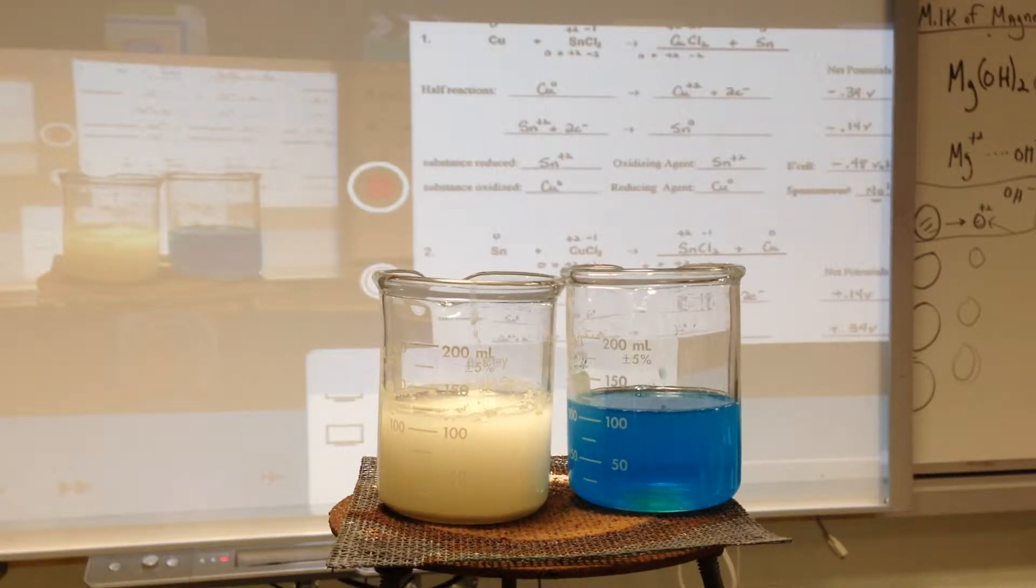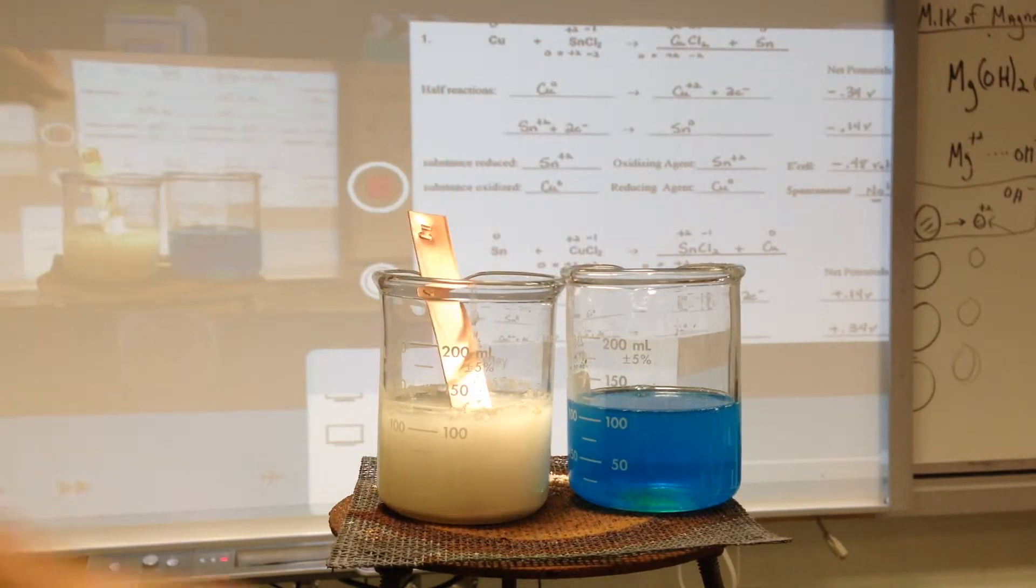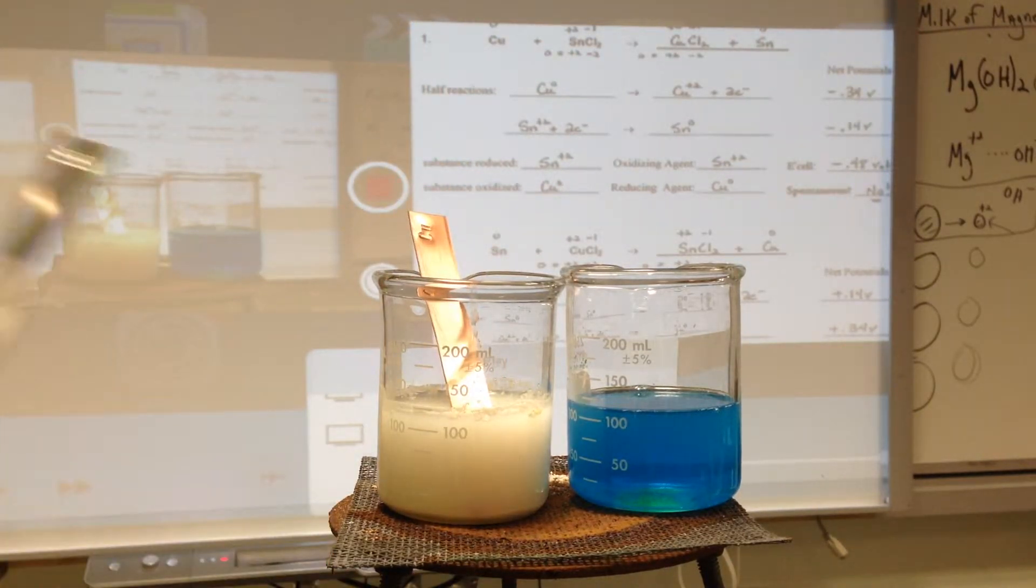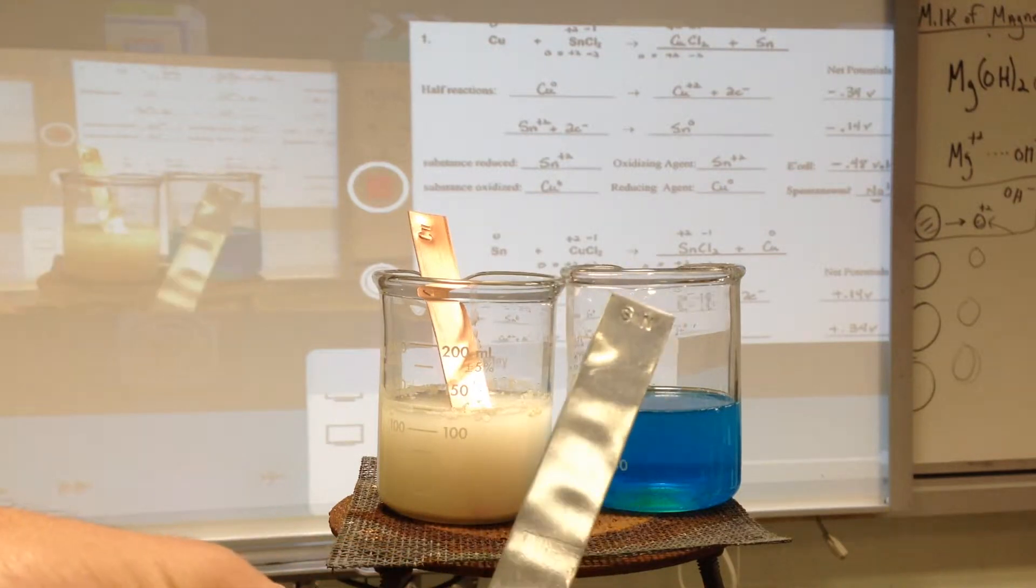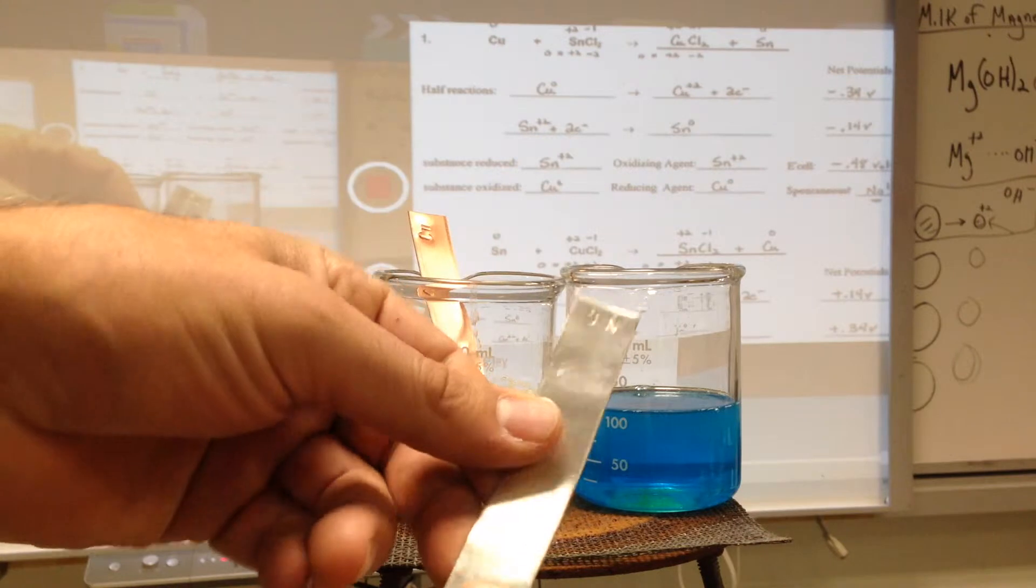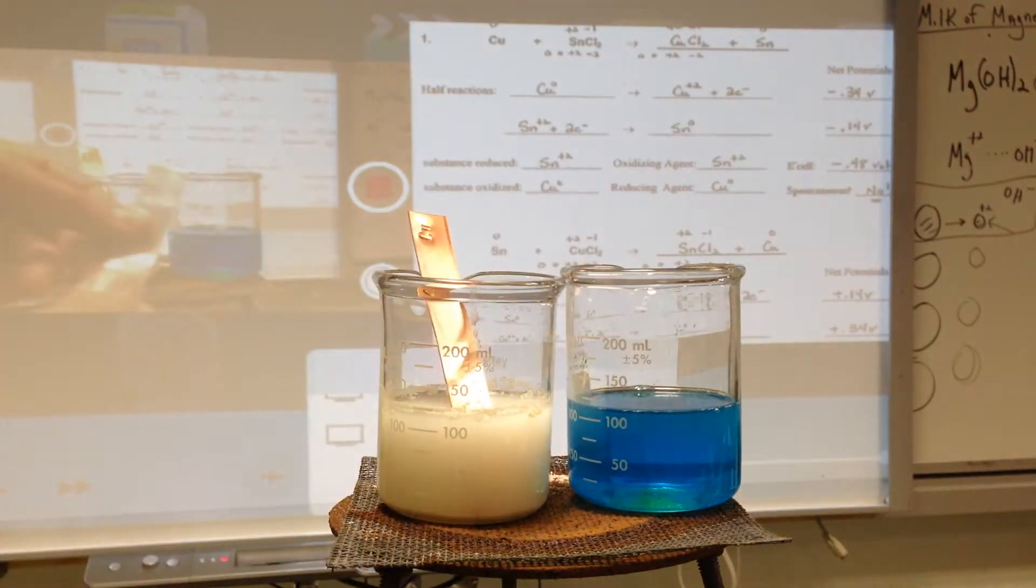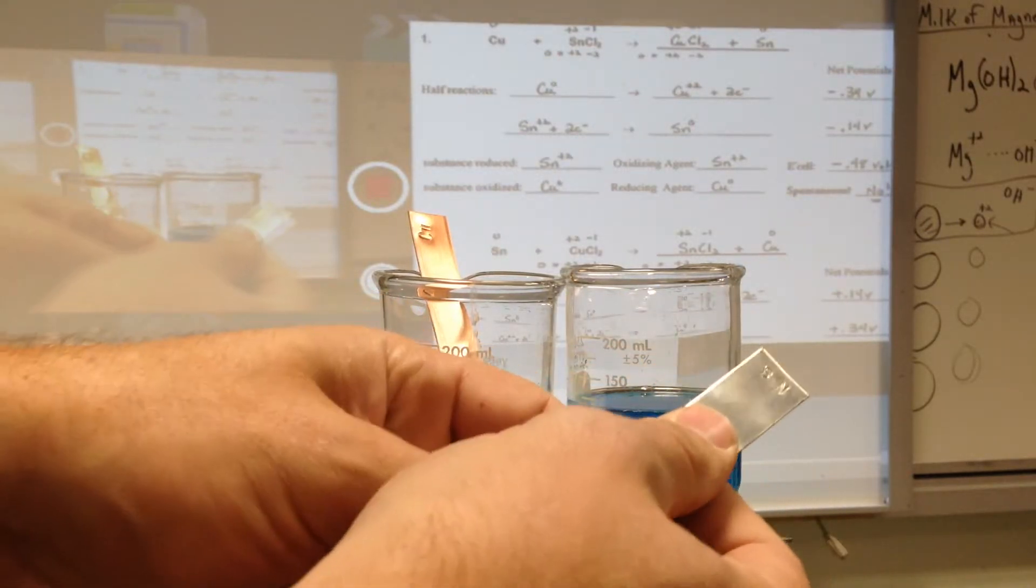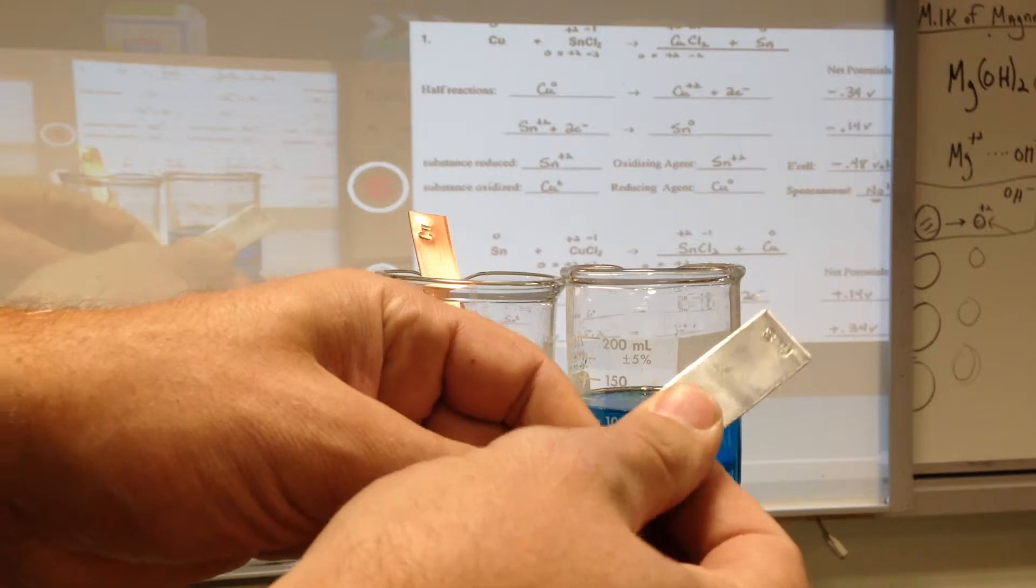I'm going to put copper in the tin plus two solution, and I'm going to put tin, which is one of my favorite metals. A lot of luster, a lot of shine, and it bends very easily. If you played with it you'd feel the same way. This is a very thick piece of tin, and it's very pliable.